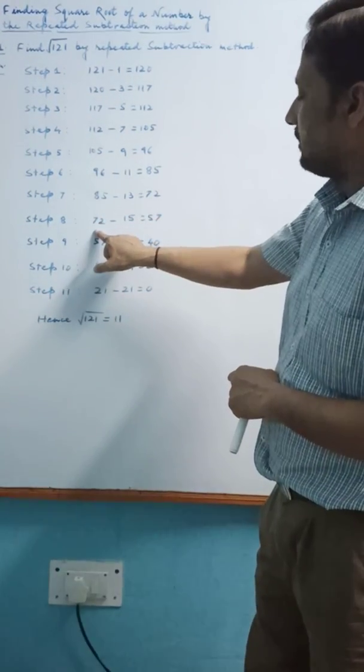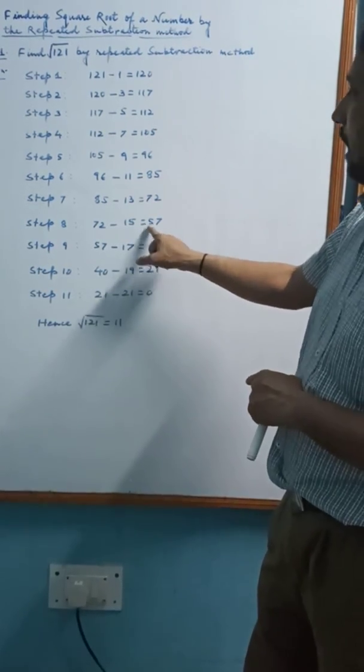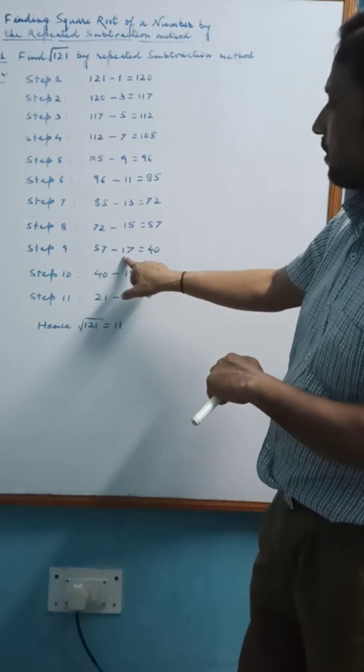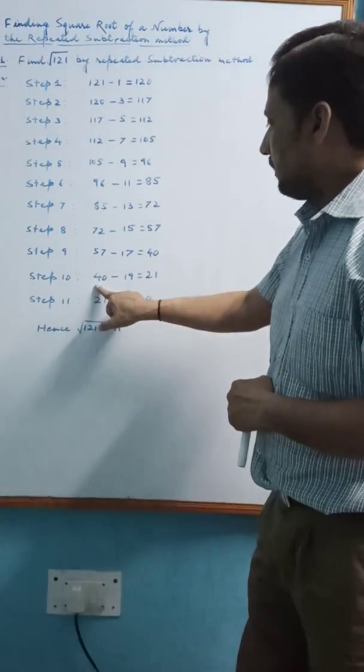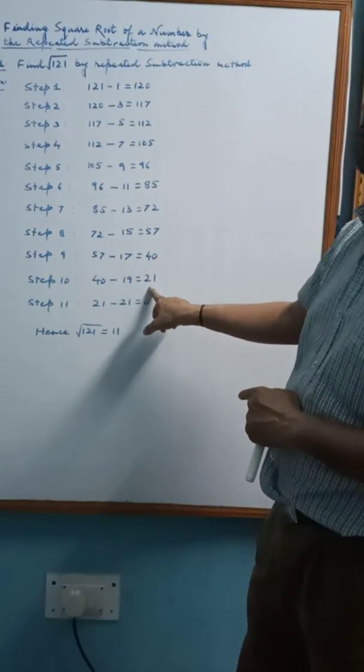72 is subtracted by the next odd number 15, we find 57. 57 is subtracted by the next odd number 17, we find 40. 40 is subtracted by the next odd number 19, we find 21.